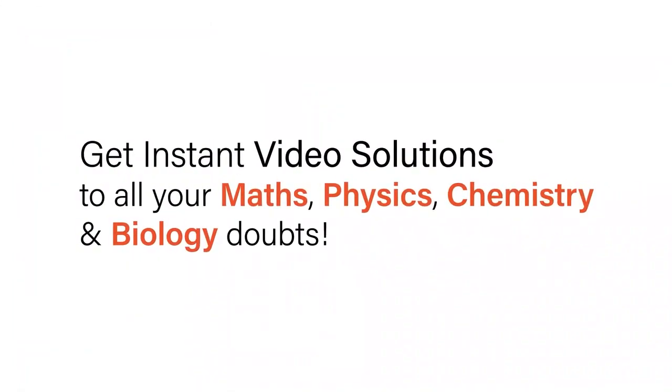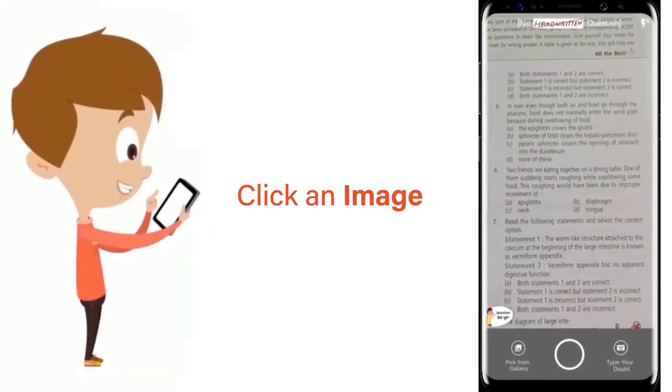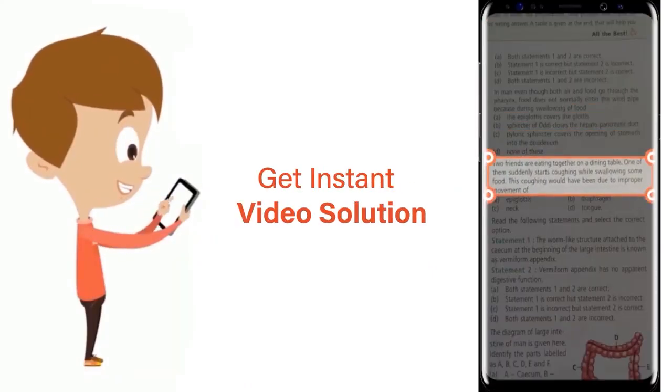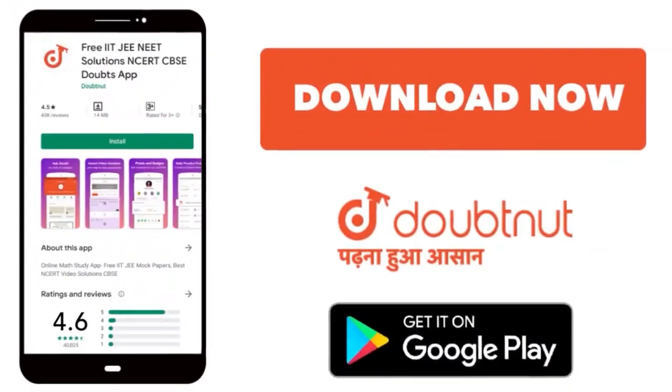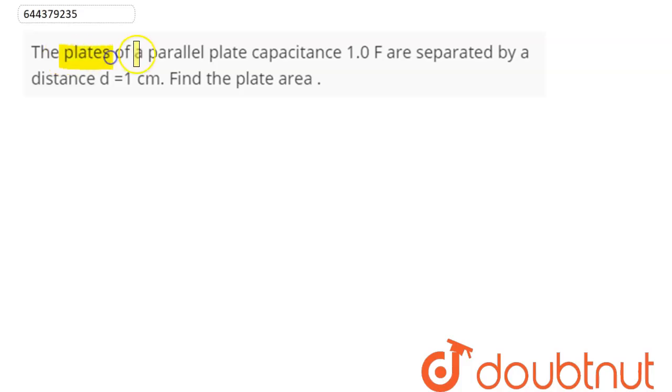With Doubtnet, get instant video solutions to all your maths, physics, chemistry, and biology doubts. Just click the image of the question, crop the question, and get instant video solution. Download Doubtnet app today. Question is: The plates of a parallel plate capacitance one farad are separated by a distance d equal to one centimeter.